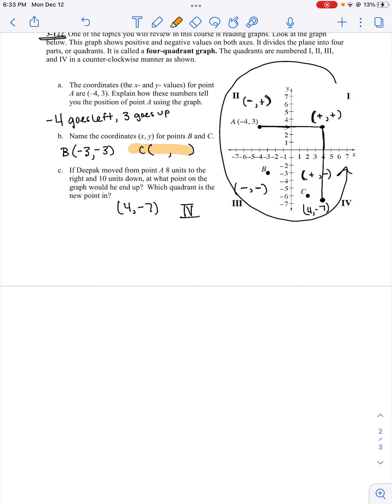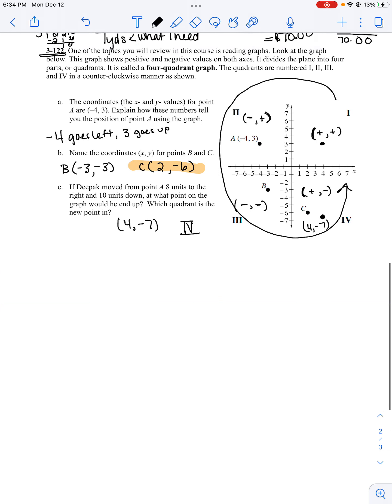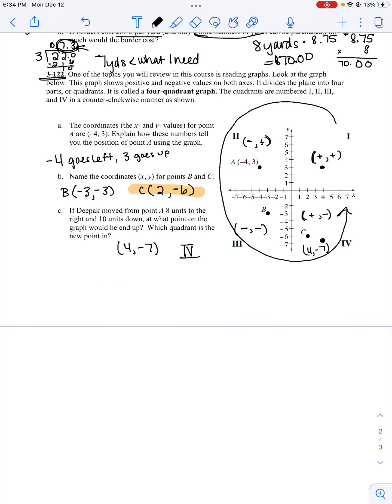Now, before I sign off, I forgot to do point C. Point C is down here in quadrant 4. We went over 2 and down 6. So over 2, down 6. With that, that is the end of this recording. As always, if you need help...